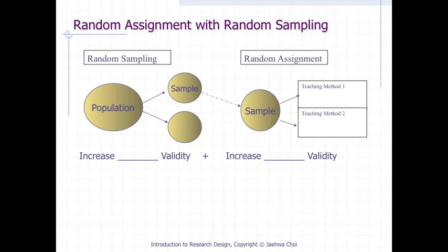Again, random assignment can yield strong internal validity, and random sampling can yield strong external validity. If we can combine both random sampling and random assignment, we can increase both external and internal validity. Please think about whether you can adopt both options in your research design. If you cannot, please explain why you can't.